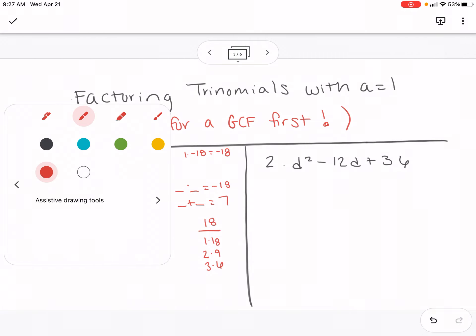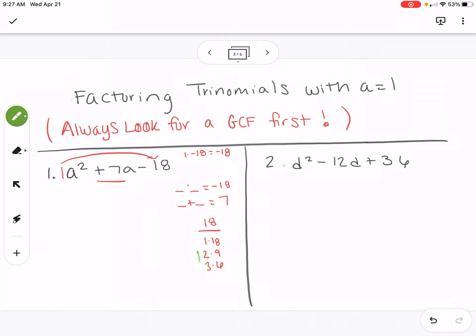Now I'm going to check which of those adds or subtracts to give us seven. So two and nine, if we subtract, we get seven. And then I'm going to want the two to be negative, because negative two times nine is negative 18, and negative two plus nine is seven.